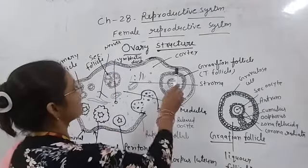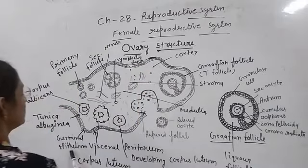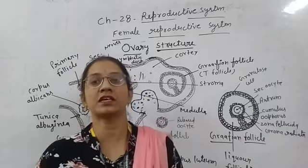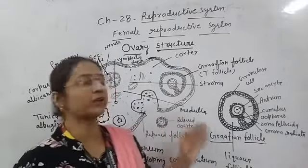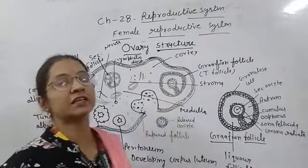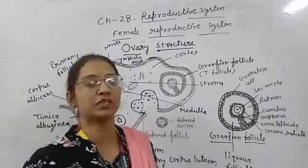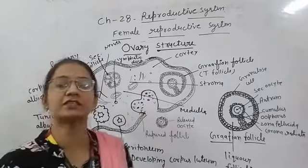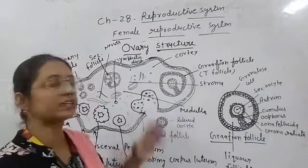This layer is called the germinal epithelium. So the outer layer is the visceral peritoneum, the inner layer is the white fibrous tissue called Tunica Albuginea, and both are lined by a single layer of germinal epithelium which has germ cells present.